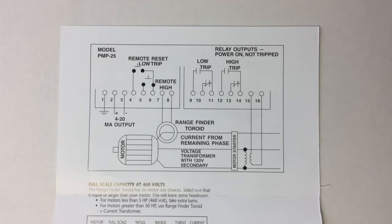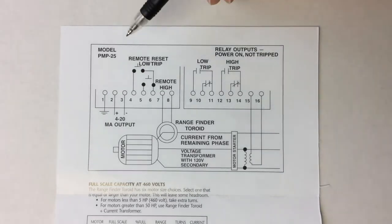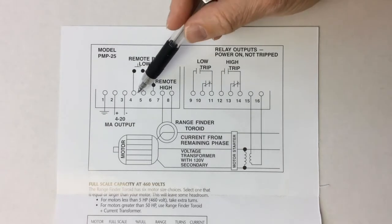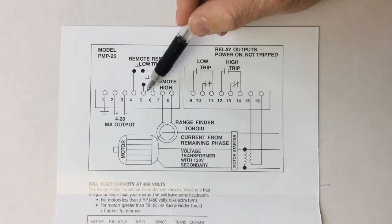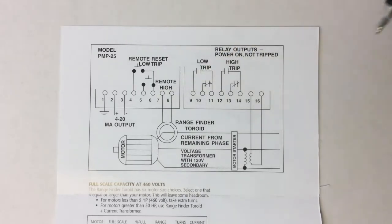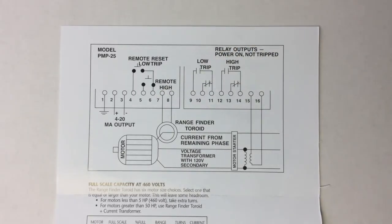Once tripped, the output relays will latch. They can be reset manually by the front panel reset button or by a remote switch connected to the terminal strip. The remote resets can also be hardwired together for automatic reset. Reset can only be done if the trip condition no longer exists or if the motor is off.